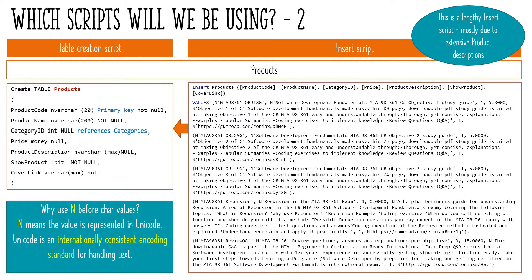Each Category ID in the list references a valid Category ID from the Categories table. The Product Description field is an nvarchar max field. The product descriptions are very long, so the best way to accommodate such data is by using nvarchar or varchar max types. The 'n' means Unicode, a consistent encoding standard for handling international text. The show product column is of bit type — a boolean true/false type where 1 represents true and 0 represents false.